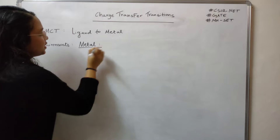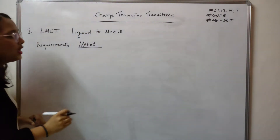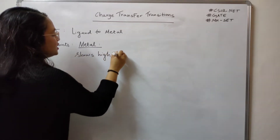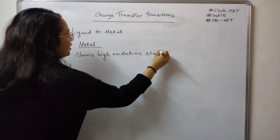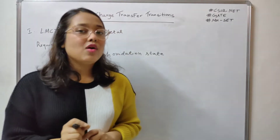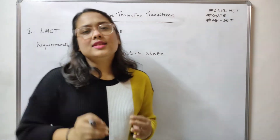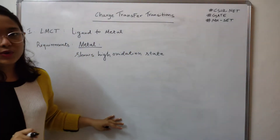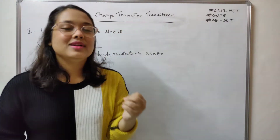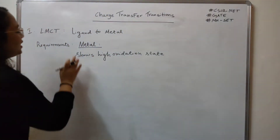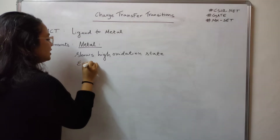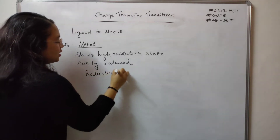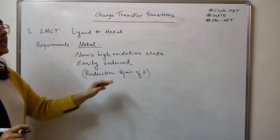With respect to the metal, two requirements must be met for LMCT. First, the metal needs to show a high oxidation state. Second, the metal should be easily reduced — meaning it should be able to easily gain electrons. I won't ask you to memorize these; I'll give a logical justification for all the requirements.